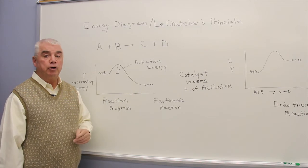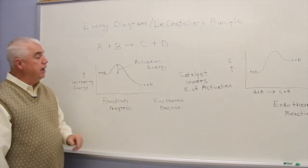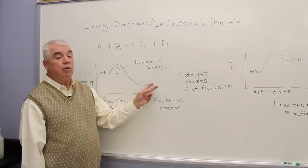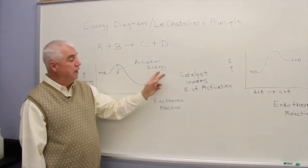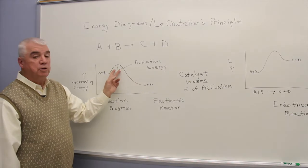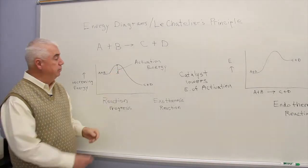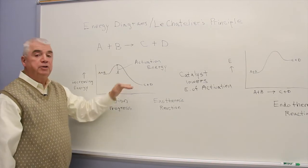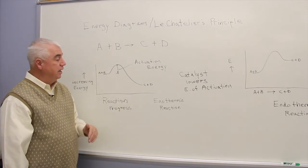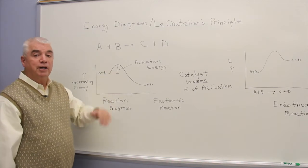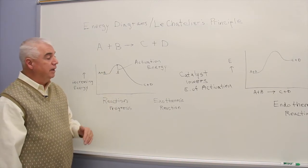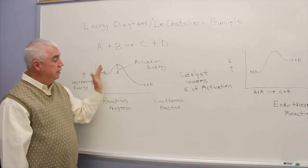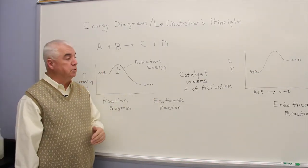An energy diagram like this helps us explain how a catalyst works. A catalyst lowers the energy of activation, reduces the height of this energy barrier, makes it easier for A and B to form product. Milder conditions are involved. Catalysts are tremendously valuable substances because they help reactions proceed smoothly.